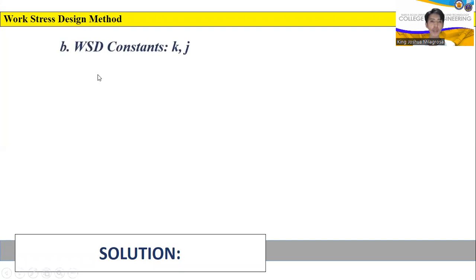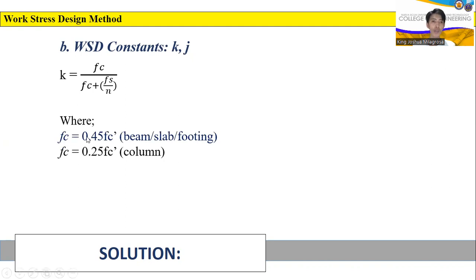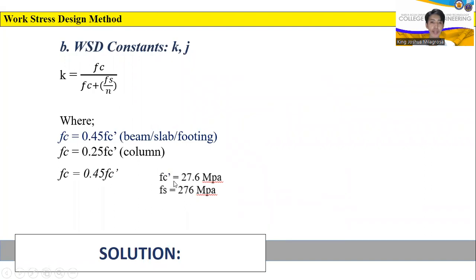Next, we compute the WSD constants K and J. K is equal to FC divided by FC plus the quotient of FS over N, where FC is equal to 0.45 FC' for beams, slabs, and footings. For columns, FC is equal to 0.25 FC'. Since our given figure is a beam, we use 0.45 FC'. With FC' equal to 27.6 MPa, multiplying by 0.45 gives us FC equal to 12.42 MPa.